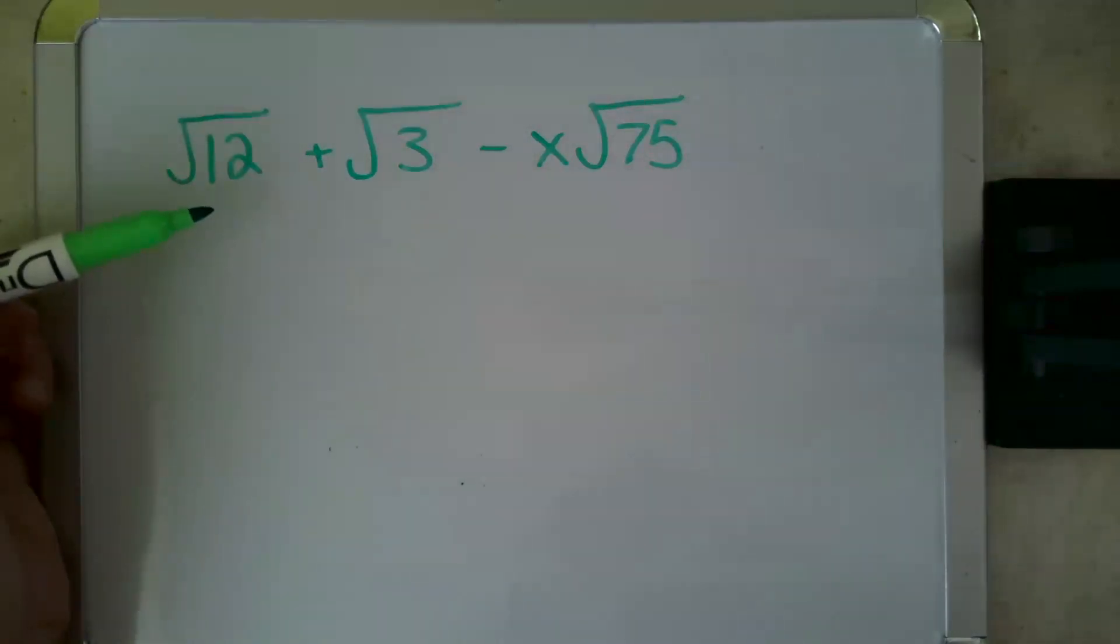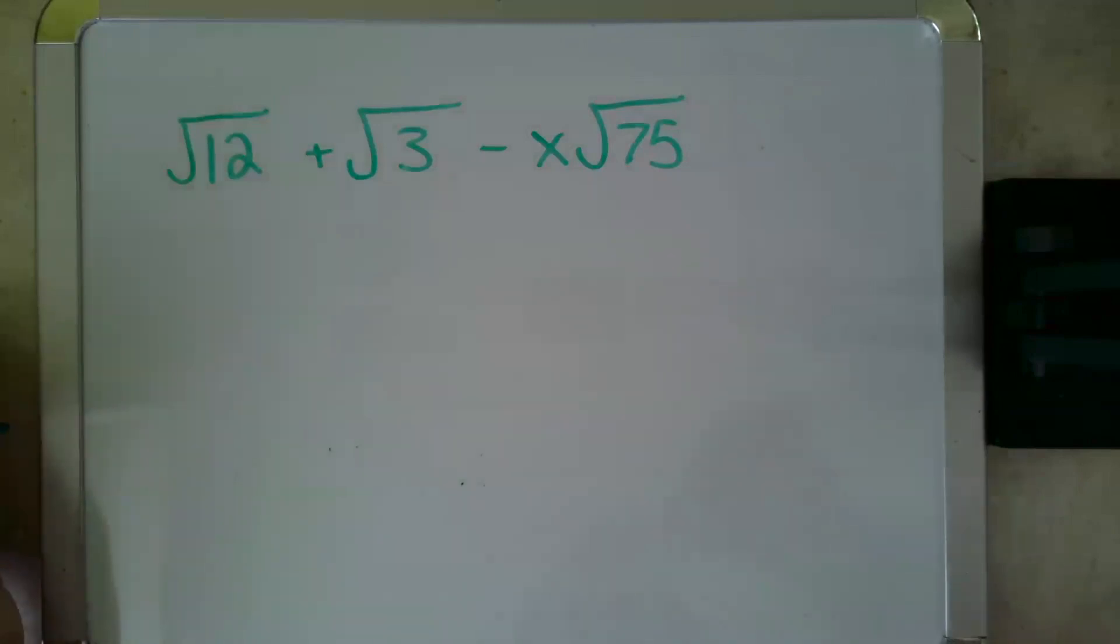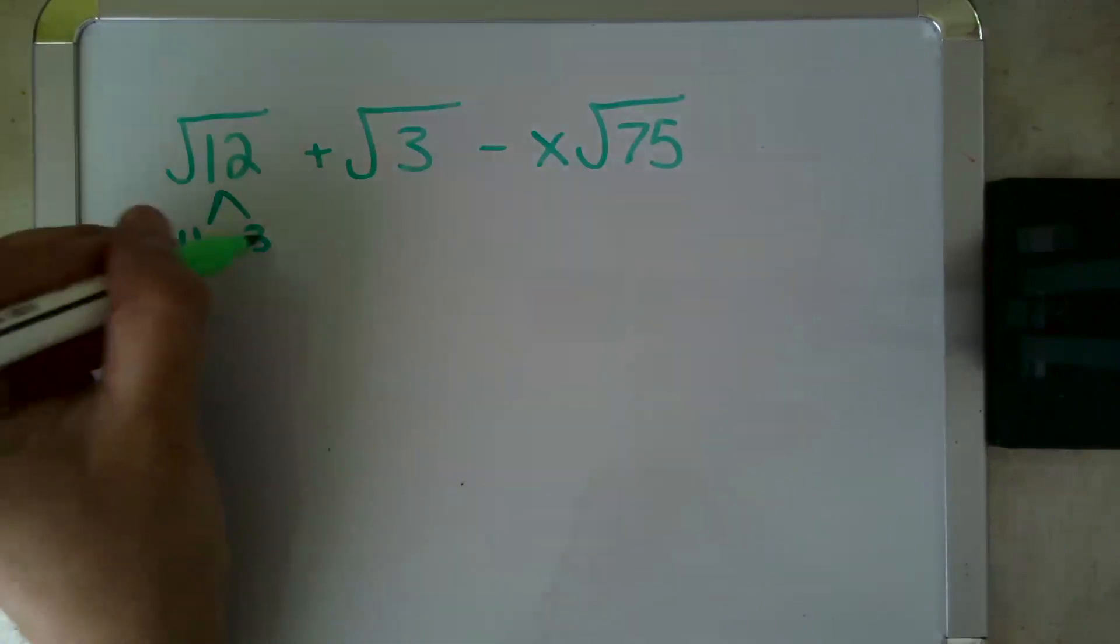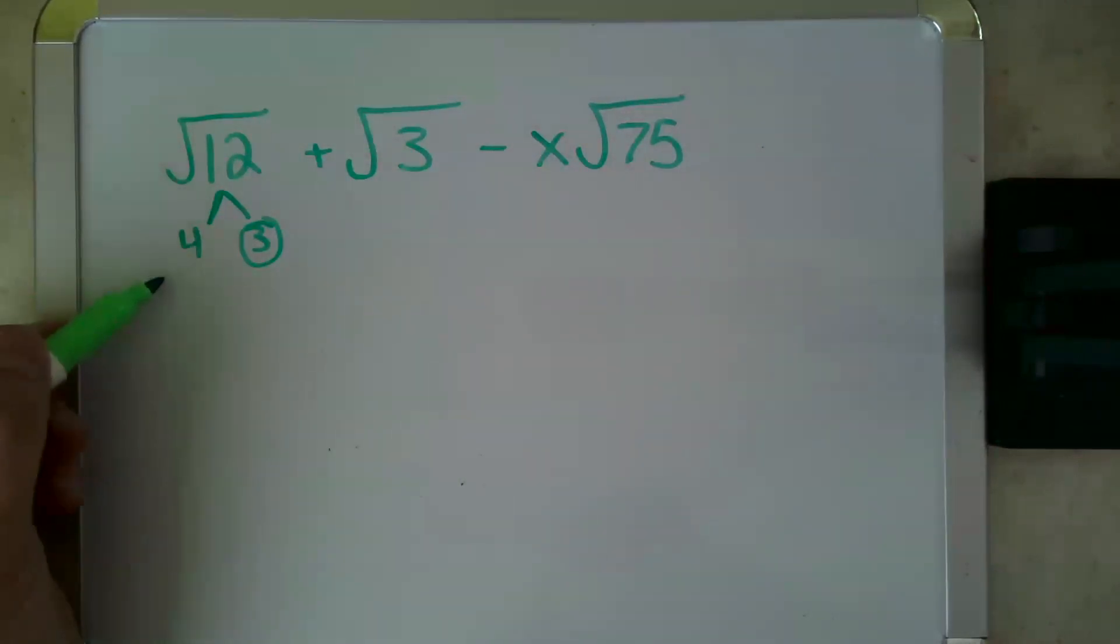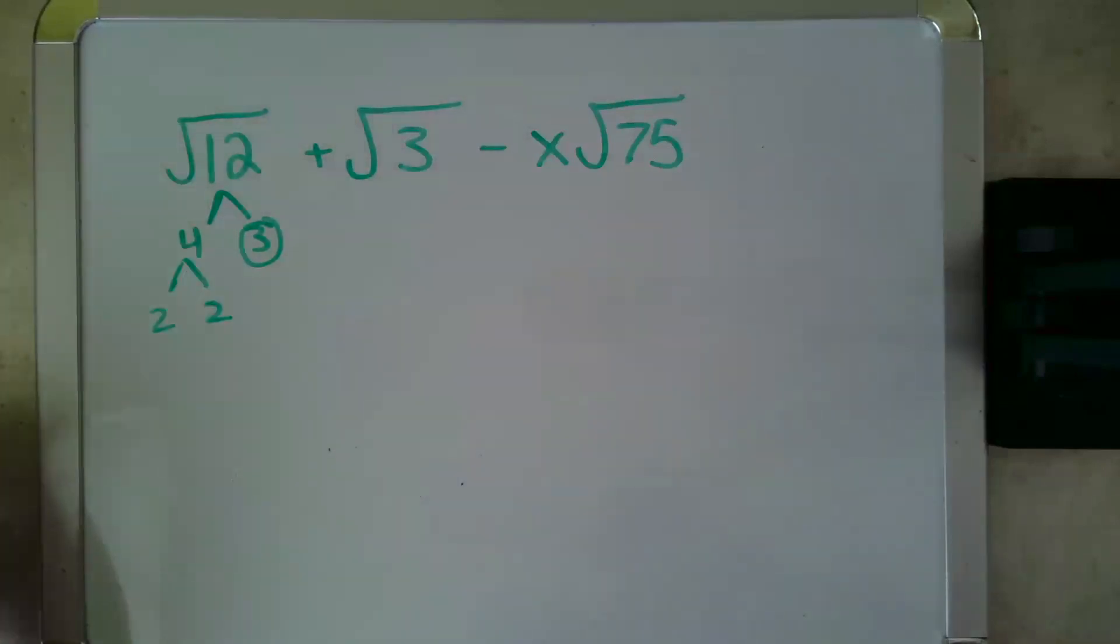So the way to simplify is to start by factoring what's underneath your square root sign. 12 factors into 4 and 3. 3 is a prime number, so I'm going to circle it. 4, well, I could work with it as 4, but I'm going to keep factoring, and 4 becomes 2 and 2, and those are also both prime.